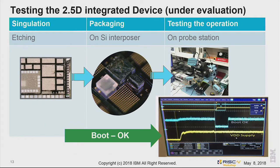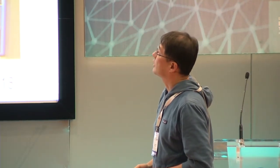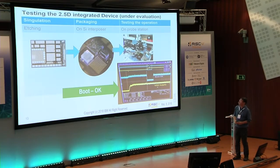Now we are doing 2.5D integration. For singulation we use etching to separate each piece, then place them on the silicon interposer. Testing on the probe station, the processor itself booted on the silicon interposer. We are now working on integration with the other components.